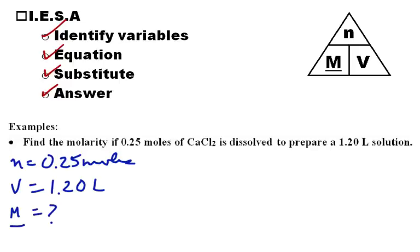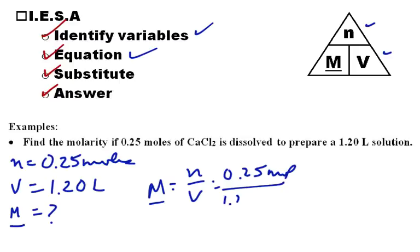Next thing, we'll decide what is our equation. So if we have molarity, then molarity equals the number of moles over the volume. So we've identified the variables, we've written our equation. Now we're going to substitute in our values. 0.25 moles divided by 1.20 liters, and then we calculate.